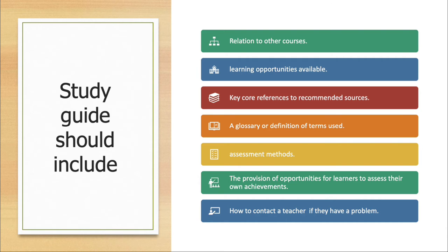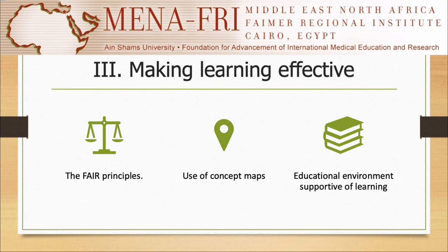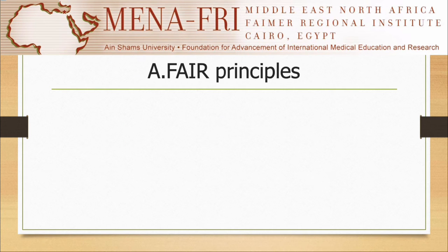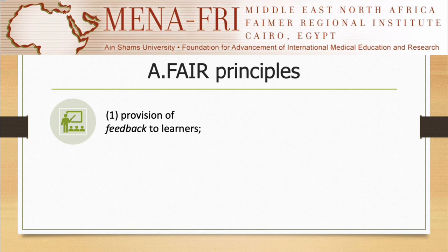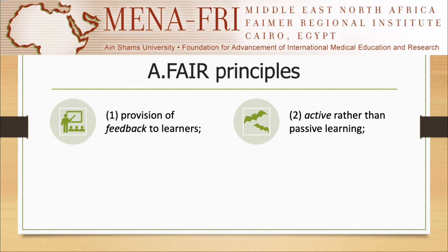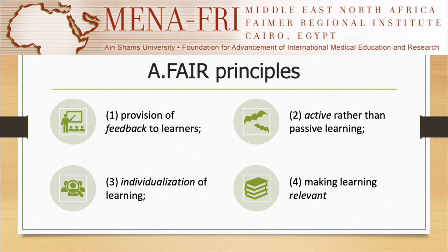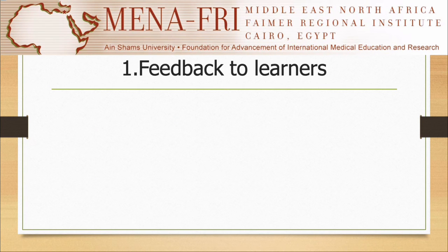The third approach is making learning effective, which can be achieved by applying the FAIR principles, the use of concept maps, and by providing an educational environment supportive of learning. The FAIR principles are based on: provision of feedback to learners, providing active rather than passive learning, individualization of learning, and making learning relevant. Providing feedback is critical for the educational experience. The feedback provided should be effective, and here are some guidelines on how to make your feedback effective.